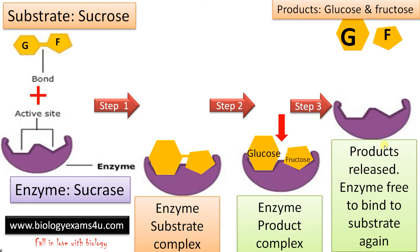Enzymes can be reused again and again. In summary: step one is the formation of the enzyme-substrate complex by the binding of substrate to the active site. Step two, this binding triggers the formation of product — the enzyme-product complex. Step three, the products are released and the enzyme is free to bind to another substrate again.